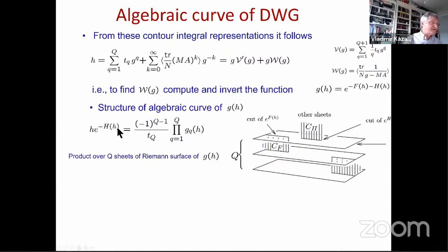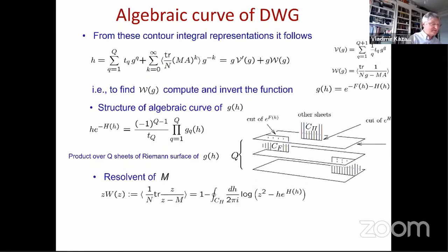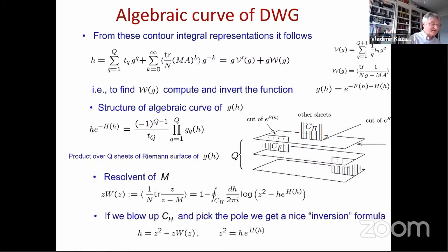If we know the function g, we just invert it to get h(g), giving us what we need to compute. We study carefully the Riemann surface of the function g(h). It appears to have several sheets according to the power of the potential, and the product of these sheets gives the exponential of h(h). There are two cuts on a particular sheet: the cut of f and the cut of h.